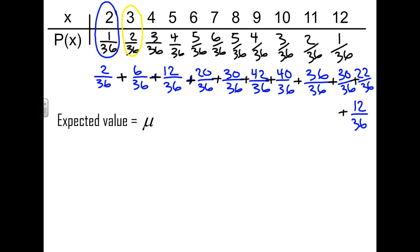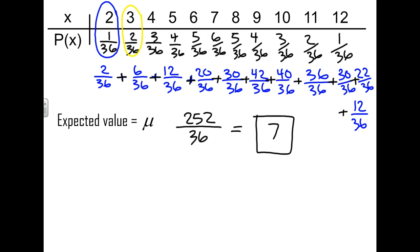If you multiply all the outcomes by their probabilities and add them all together, you end up with 252/36, which is exactly 7. The expected value means that if you're rolling two number cubes, you'd expect to get a sum of 7 — it's the most probable outcome. That's everything for today; finish the worksheet for tomorrow.